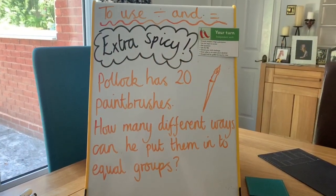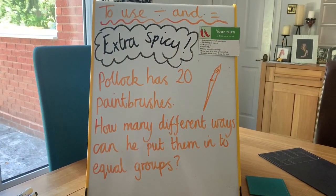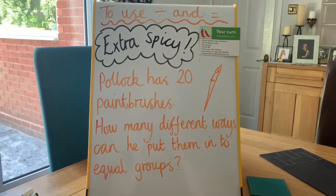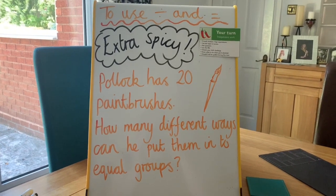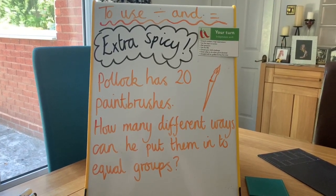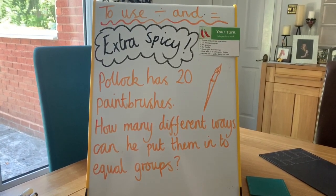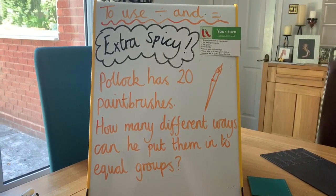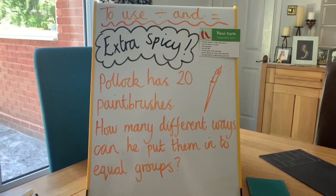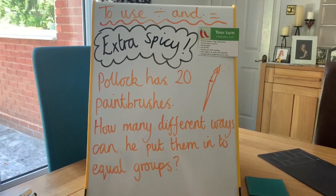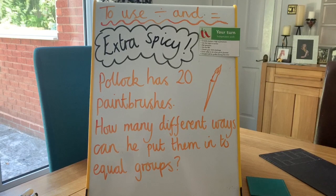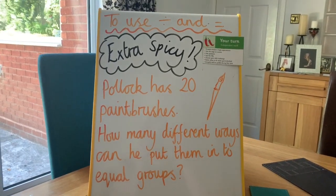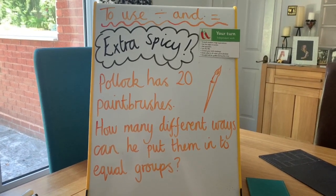And we've got an extra spicy challenge — it's a bit of an investigation, something similar to what we've done in class. Jackson Pollock has 20 paintbrushes. How many different ways can he put them into equal groups? Remember, don't start with a random number — start with one group first. You know all 20 will fit in one group, and then work it out from there. Write down all of the possible ways that he could do it.